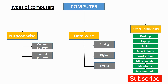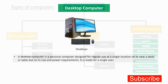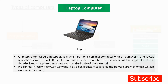Now for size and functionality, the first is the desktop computer, which we've already discussed. A desktop computer is a personal computer designed for regular use at a single location near a desk or table. Due to its size and power requirements, it requires a direct power supply, has no battery, and is made for a single user.